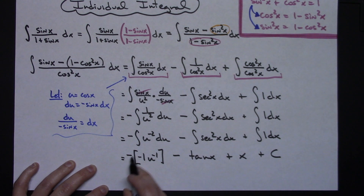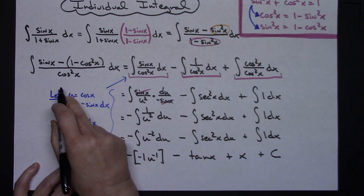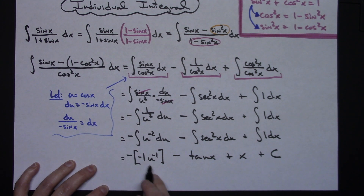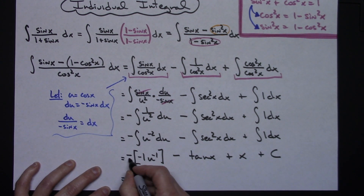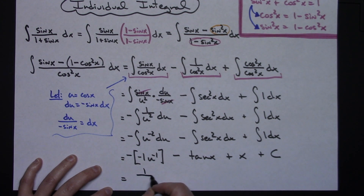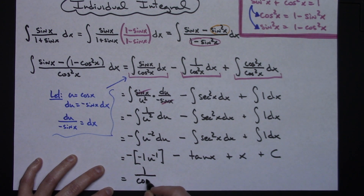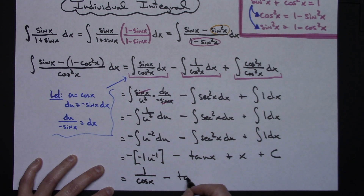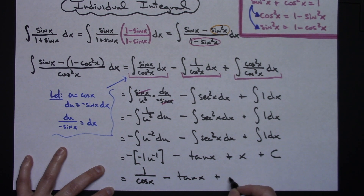Now it's wise to simplify and replace u with cosine x, all in one step. That negative times negative makes a positive, and moving u to the bottom gives 1 over cosine x. So the final answer is 1 over cosine x minus tangent x plus x plus C.